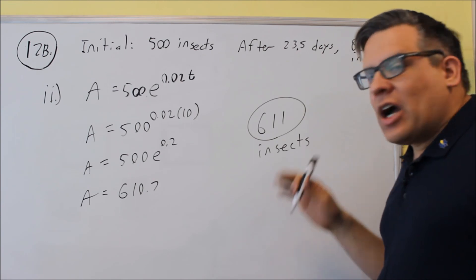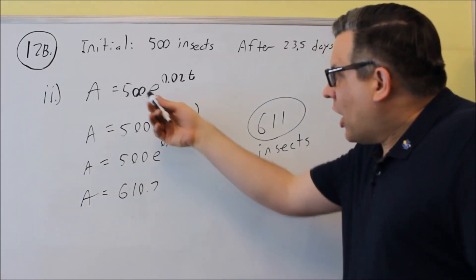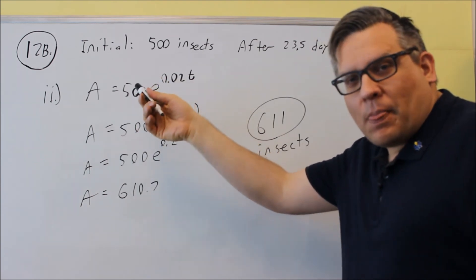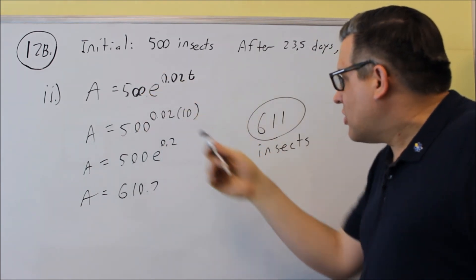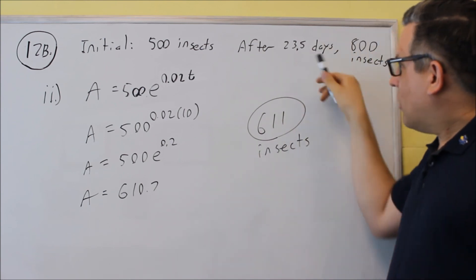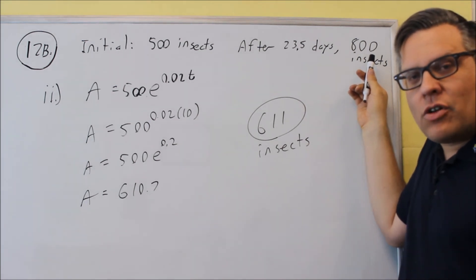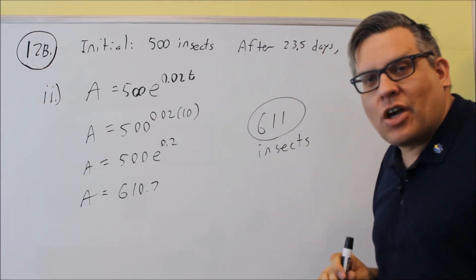So that's an estimate for how many insects would be there after 10 days from when the experiment began. So when it started with 500 on the first day, then 10 days later, it's estimated there would be 611. That makes sense because if it takes 23 and a half days to grow to 800, that means we definitely should have a number less than 800 since we haven't reached that number of days yet.